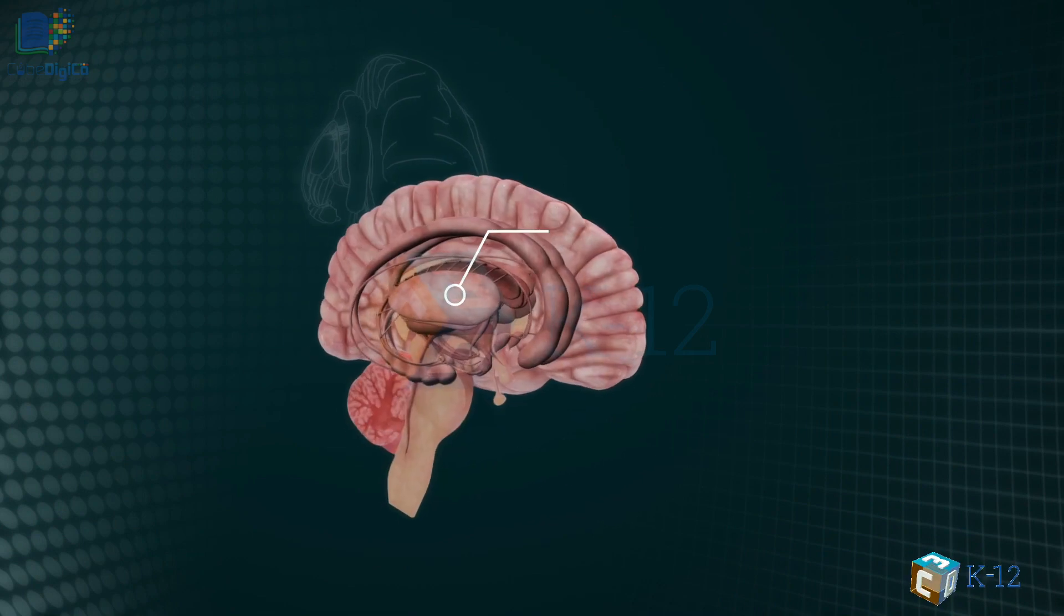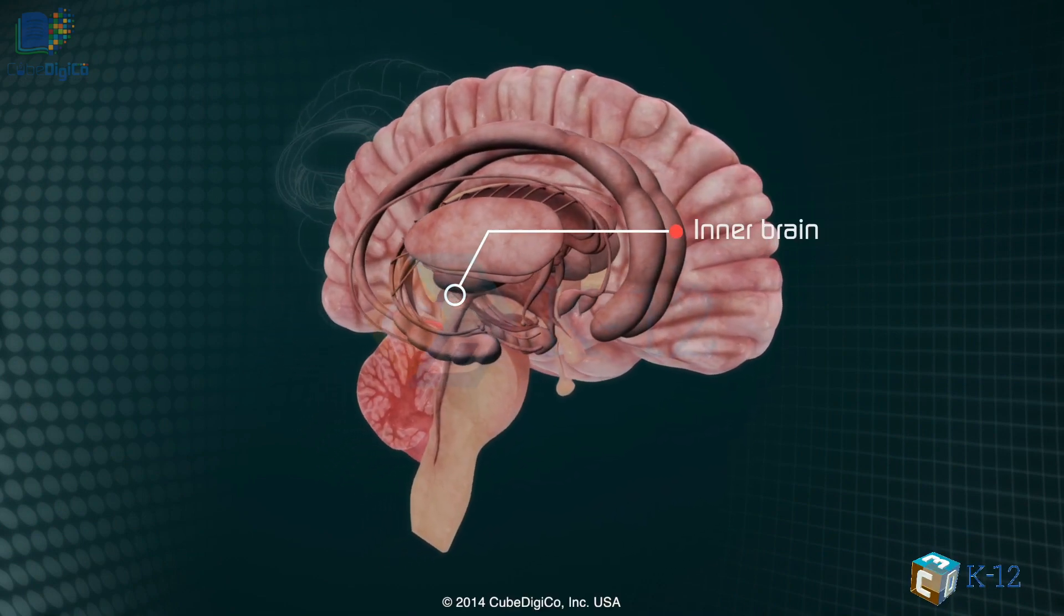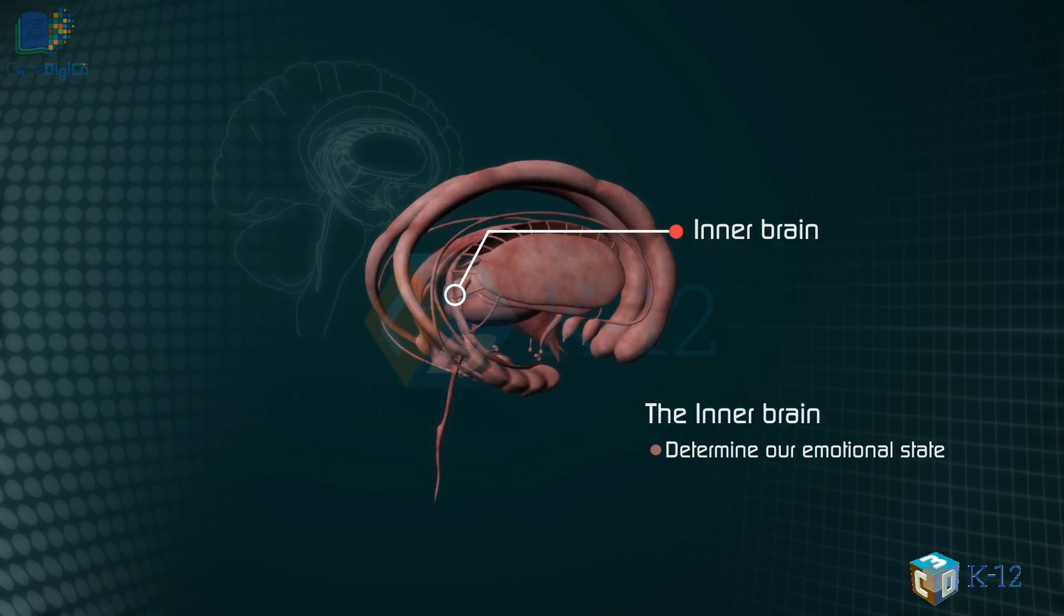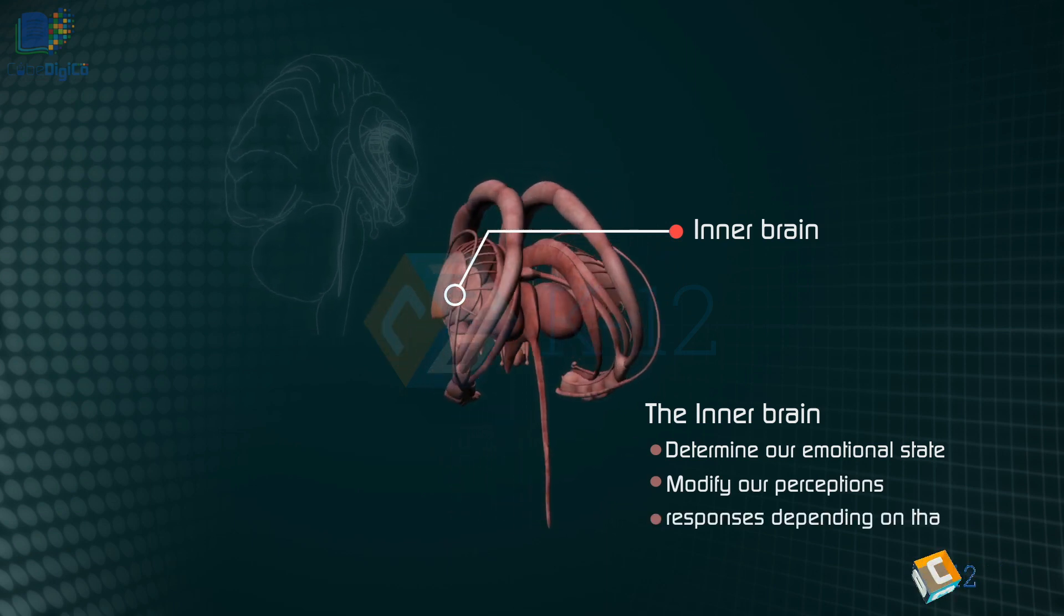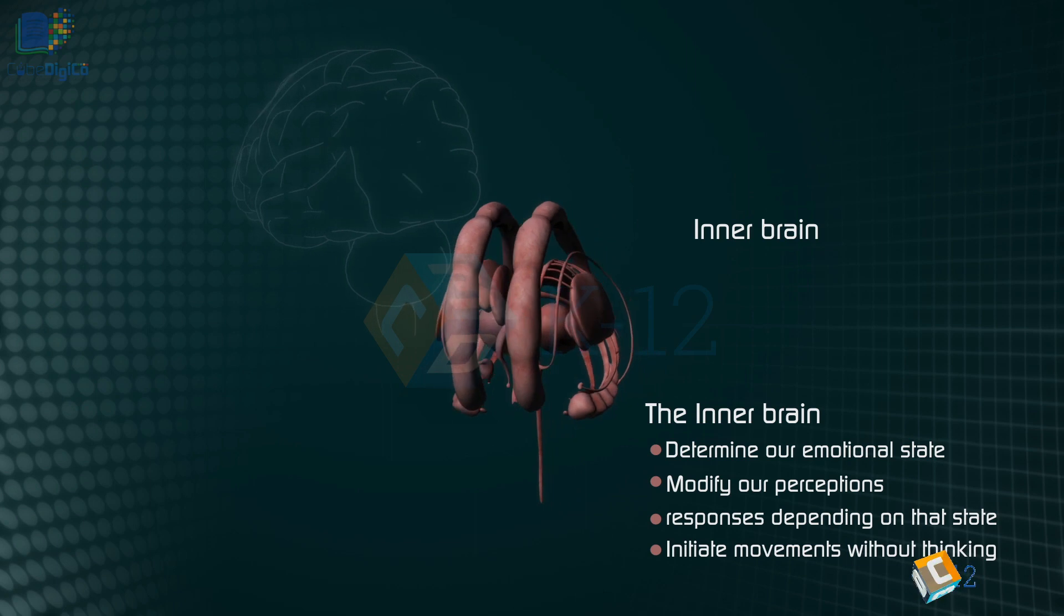The inner brain. Deep within the brain, hidden from view, lie structures that are the gatekeepers between the spinal cord and the cerebral hemispheres. These structures not only determine our emotional state, they also modify our perceptions and responses depending on that state and allow us to initiate movements without thinking about them.